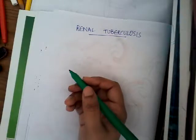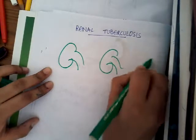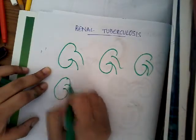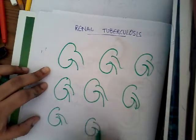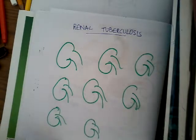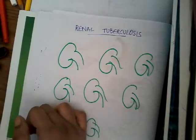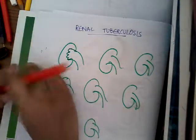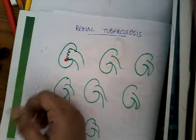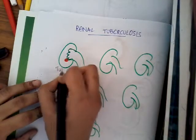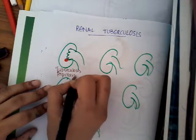Renal tuberculosis can be of nearly 8 types. The first type is tuberculosis papillary ulcer. If this is the renal papilla, there is a tuberculous papillary ulcer forming at that site. This is the first type — tuberculosis papillary ulcer.